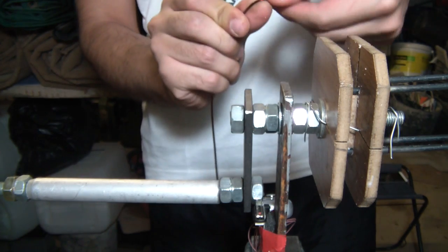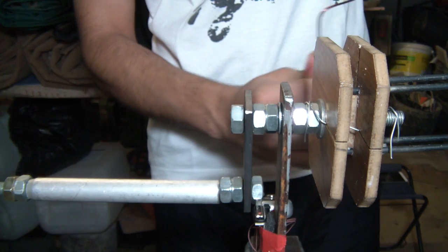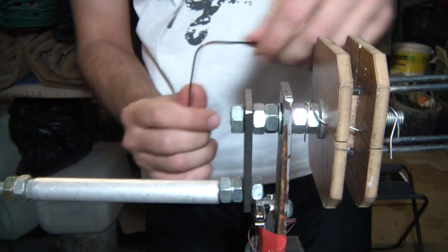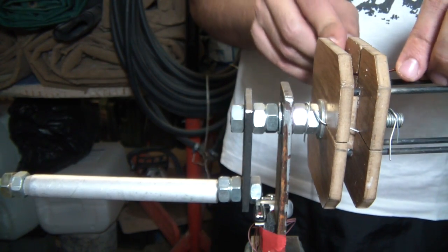To begin with the winding process I made a 90 degree turn and stuck the wire in the slot. Make sure to leave about 15 cm of copper so you can solder it later to another coil when making the stator.